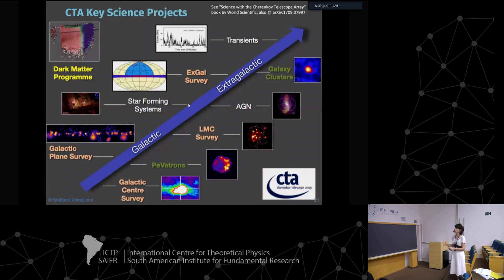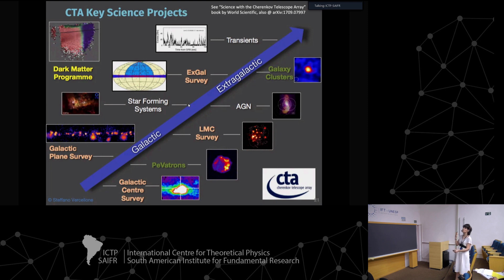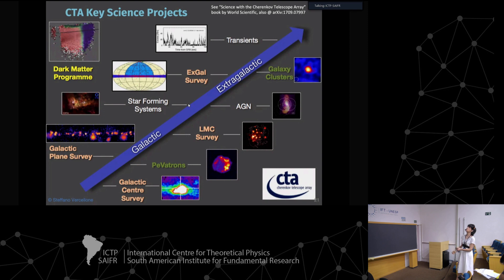This cartoon illustrates the key science projects from galactic to extragalactic scales. We are going to have the galactic plane survey, explore the galactic center, the dark matter program starting in our own galaxy, star-forming systems within the galaxy and in extragalactic systems, and also explore individual sources like cosmic ray accelerators - supernova remnants - that we know exist in our galaxy.